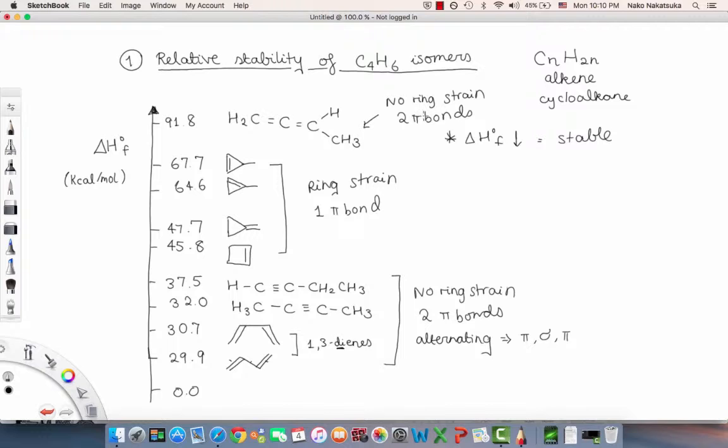So why is it in this particular order? Is ring strain a contributor? No, it doesn't seem to be the case because there's no ring strain down here and it's pretty stable, and there's no ring strain up here and it's not stable. Does it involve the number of pi bonds? Well, we have two pi bonds here, two pi bonds up here again, and one pi bond. So we're unable to see a trend based on ring strain and pi bonds. So now what can we look at? We should look at the position of the pi bonds, and this is very important for understanding conjugation.